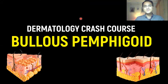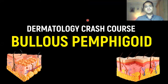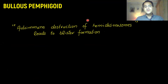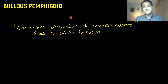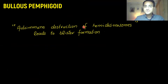In our dermatology crash course video series, we'll be talking about bullous pemphigoid. Bullous pemphigoid is an autoimmune disease in which the body's immune system destroys its own structures — specifically, hemidesmosomes — through autoimmune destruction.